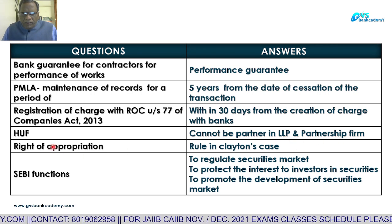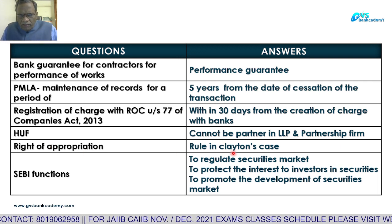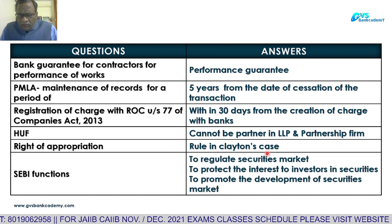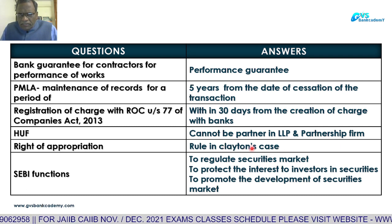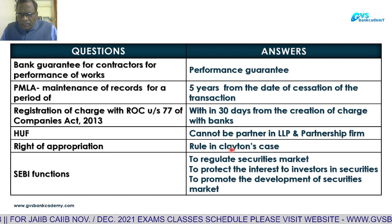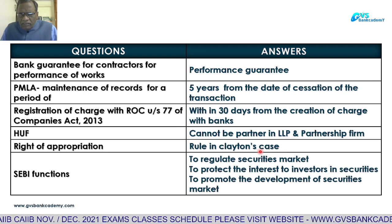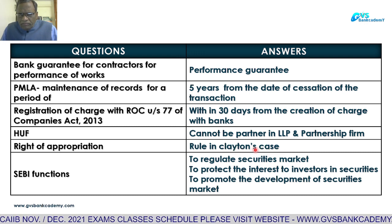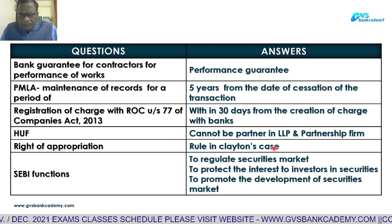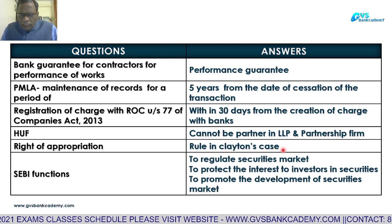Right of Appropriation — the rule in Clayton's case. In Clayton's case, when there are running accounts such as cash credit accounts or overdraft accounts with running ledger balances, particularly in partnership firm cases, whenever any partner expires, banks must stop operations in that running account in order to crystallize and decide the liability of the deceased partner on that day.